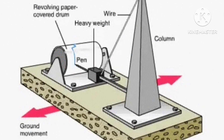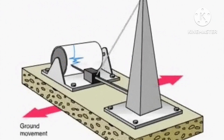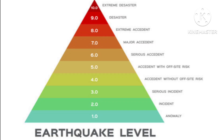The instrument used to measure the earthquake's magnitude is called a seismograph. The Richter scale is a scale of numbers used to tell the power of an earthquake.